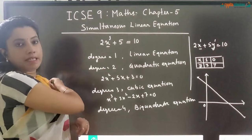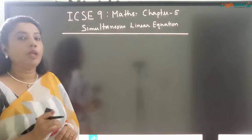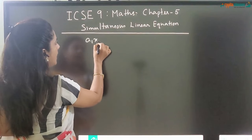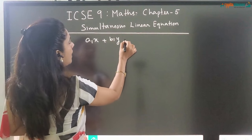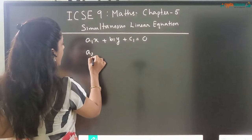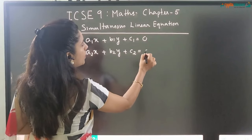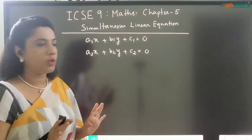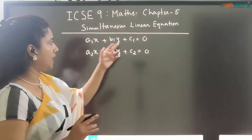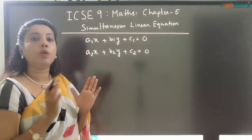Now we will talk about simultaneous linear equations. If we have two linear equations — the general form being a1x plus b1y plus c1 equal to 0, which represents a line, and another one a2x plus b2y plus c2 equal to 0 — these are two linear equations. Since x and y each have degree 1, the entire polynomial has degree 1. But the values of a1, b1, c1 are different, and accordingly you get two straight lines.